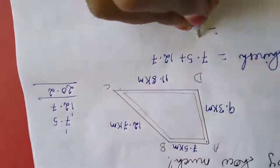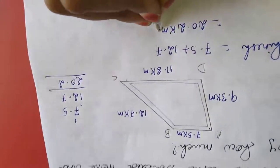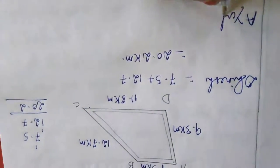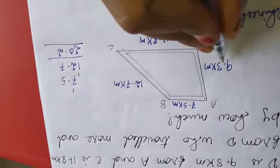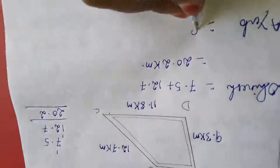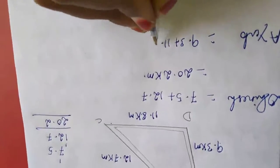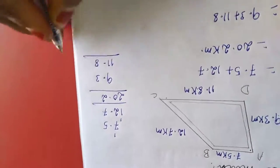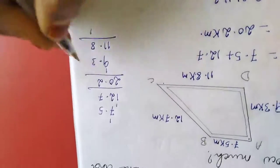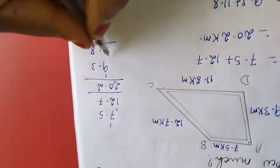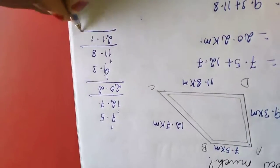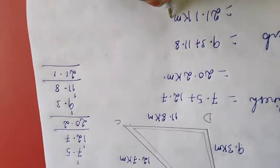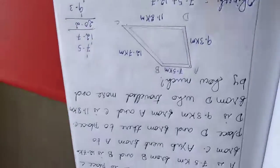So 20.2 km. Next one name is Ayu. She is moving like this, so 9.3 plus 11.8. 9.3 plus 11.8. 3 plus 8, 11, 1 carrying 1. So 10, 11, 1 carrying 1, so 21.1 km. So who is traveling more, more distance?